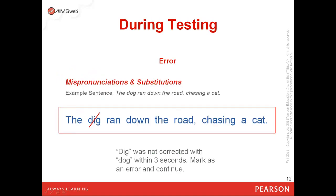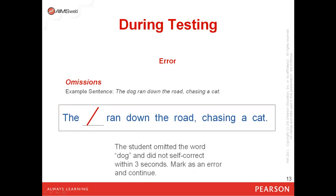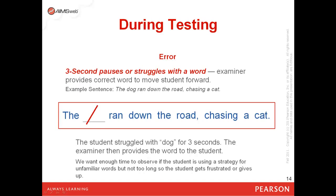If a student mispronounces or substitutes a word with another word, that would be considered incorrect. So if the student said 'the dig ran down the road' instead of 'the dog ran down the road,' that would be incorrect. If a student skips a word in a sentence, that would also be marked incorrect. If a student pauses for three seconds or struggles with a word, that would also be marked incorrect. The examiner would provide the word to the student and allow the student to move forward. We don't want to see how long it takes for a student to decode a single word. If it can't be decoded within three seconds, move on — give the student the word, mark it wrong, and let that student continue to read other words that he or she may know.